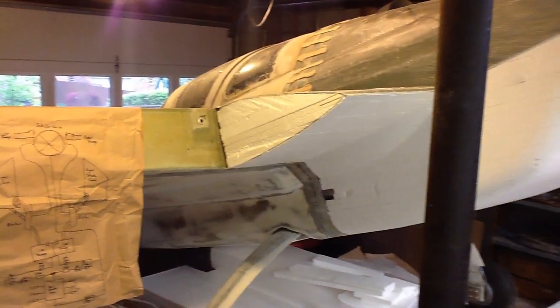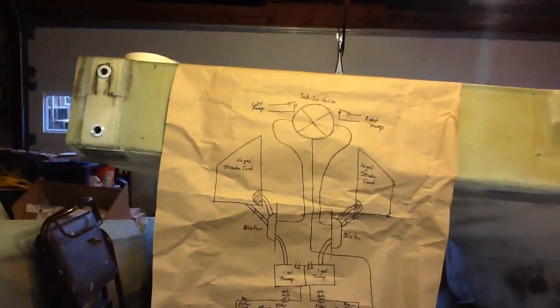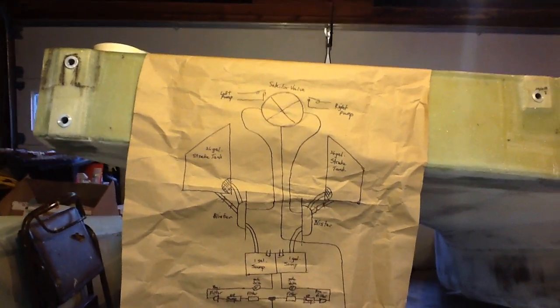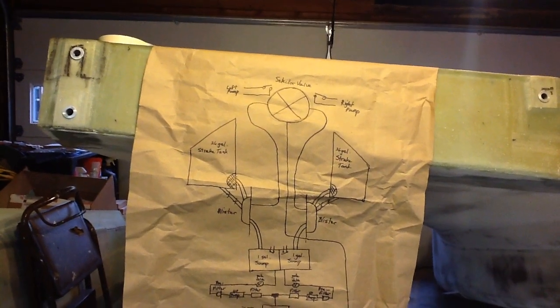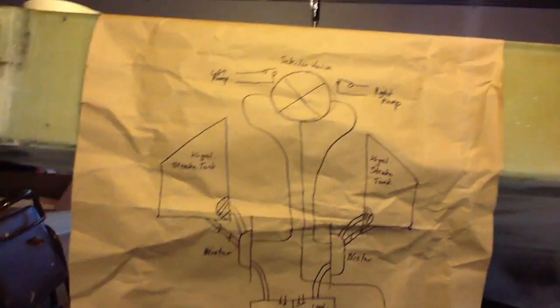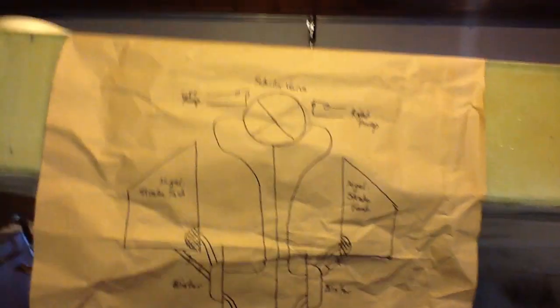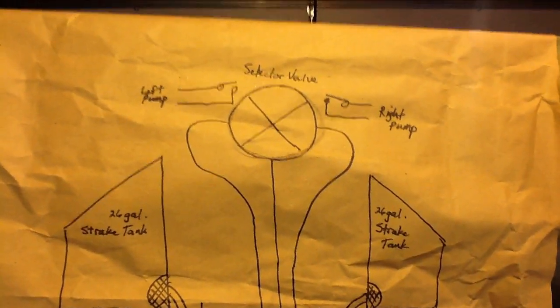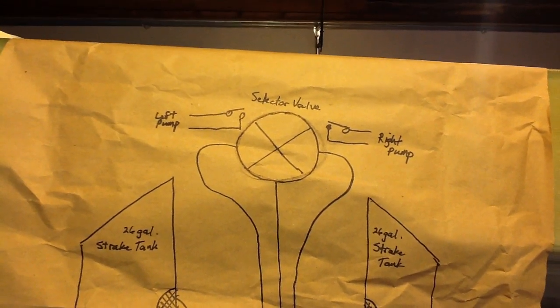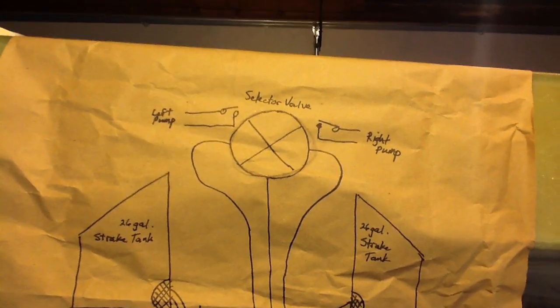I got to thinking about how the fuel system is laid out. Originally in the plans Cozy, you have a selector valve in front with three ports. Normally fuel comes into one port, the middle one, and you select the left or the right one that you want it to go to.